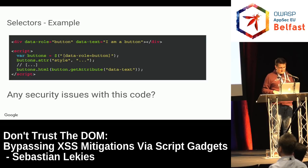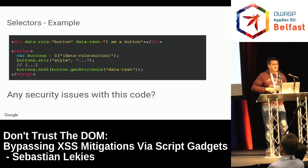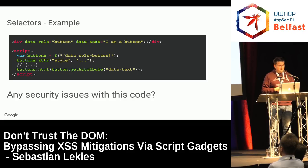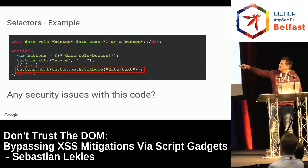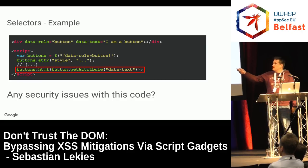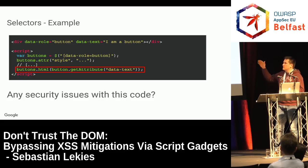Are there any security issues in this code? In a normal web application this would not seem like a security issue — it's code you see very often. But the problem is that the data-text attribute is actually rendered as HTML. This code turns a data-text attribute into a magic property with the capability of executing arbitrary HTML code. This is exactly what we call a script gadget.